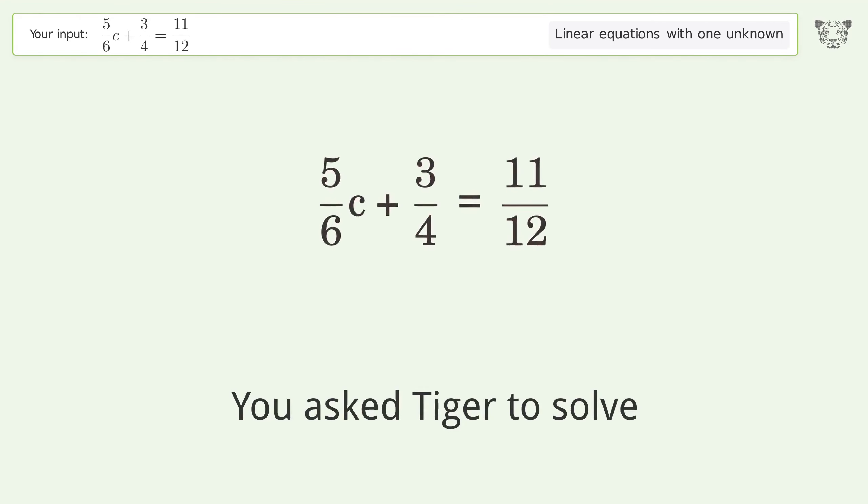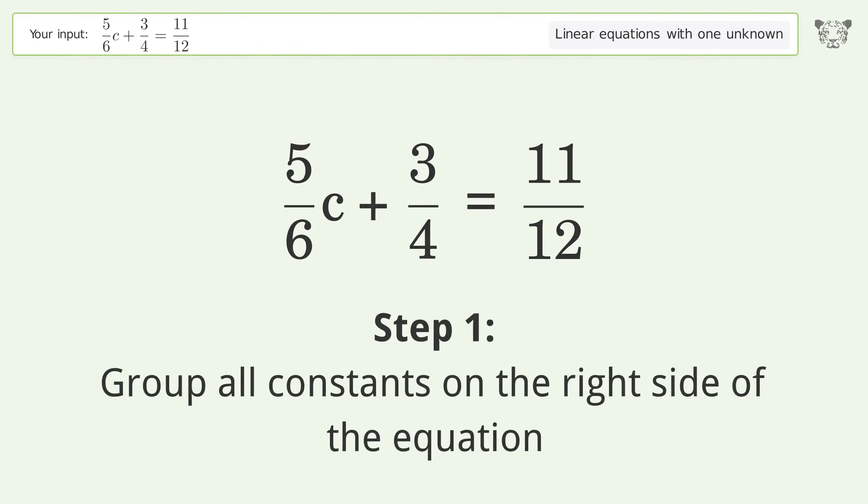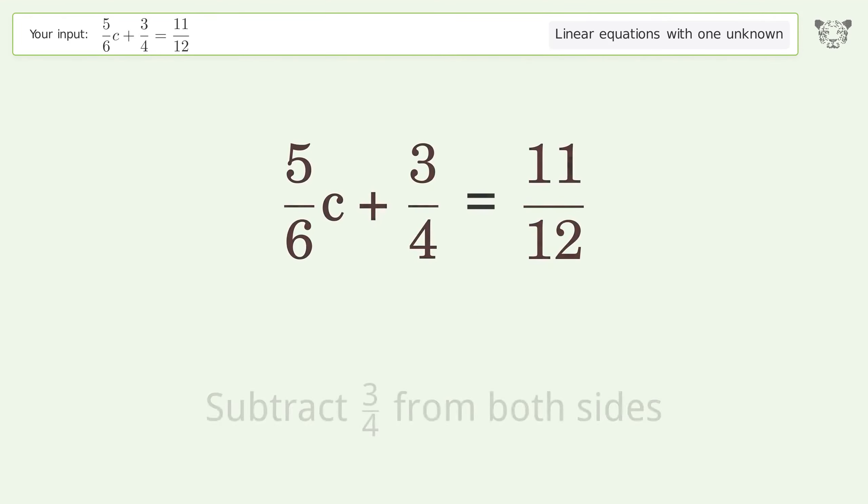You asked Tiger to solve this. It deals with linear equations with one unknown. The final result is c equals 1 over 5. Let's solve it step by step. Group all constants on the right side of the equation. Subtract 3 over 4 from both sides.